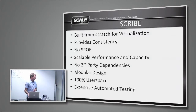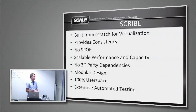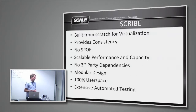As a brief overview, Scribe was built from scratch for virtualization. Our use case is QEMU virtual machines, and we wanted to build the best storage engine we could for that particular use case. We have to provide consistency — these are block devices, you have to have immediate consistency guarantees, and that's what Scribe does. It has no single point of failure, and it's scalable in performance and capacity. As you add nodes, your performance increases because you're adding spindles, and your capacity increases as well.